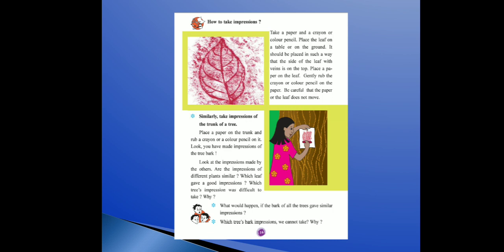Be careful that the paper or leaf does not move. In short: ek leaf lo, uski veins wali side upar rakho, leaf ko neeche ground ya table pe rakh do, uske upar paper rakho, phir paper pe dheere dheere se crayon color ghistho — toh aap dekhoge ki uski impression, uski chhaap pad jaayegi.